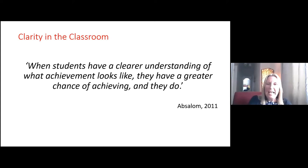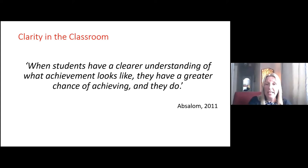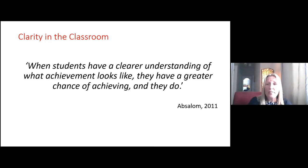Thanks, Anthony. I've been working with junior cycle in Ireland. A lot of the changes we're making in classrooms here is around clarity. With teaching, learning, and assessment, the essential part is about being clear, making sure that students understand what the intended learning is, what success looks like, and what quality achievement would look like. This is from Michael Absolum's book, Clarity in the Classroom. He said: when students have a clearer understanding of what achievement looks like, they have a greater chance of achieving. Everything I'm talking about today is about making things as clear as possible for students around assessment, so that they know what is expected of them and therefore achieve more.